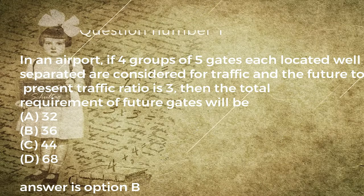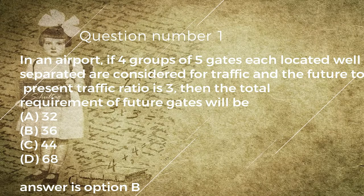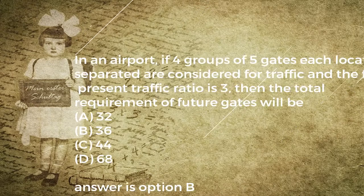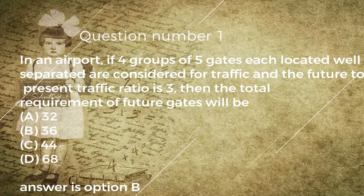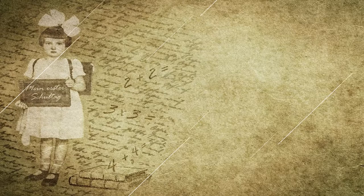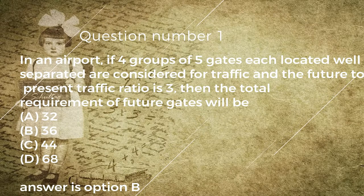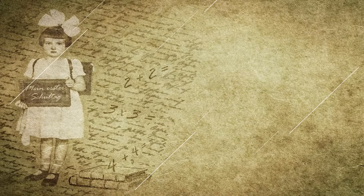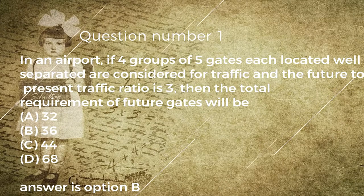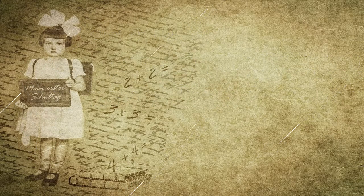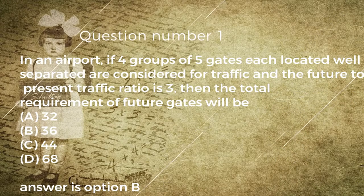Question number one: in an airport, if four groups of five gates each located well separated are considered for traffic, and the future to present traffic ratio is three, then the total requirement of future gates will be: A) 32, B) 36, C) 44, D) 68. Answer is option B.